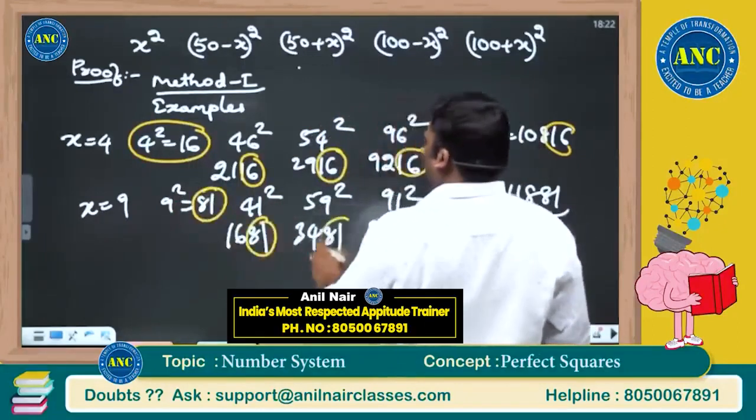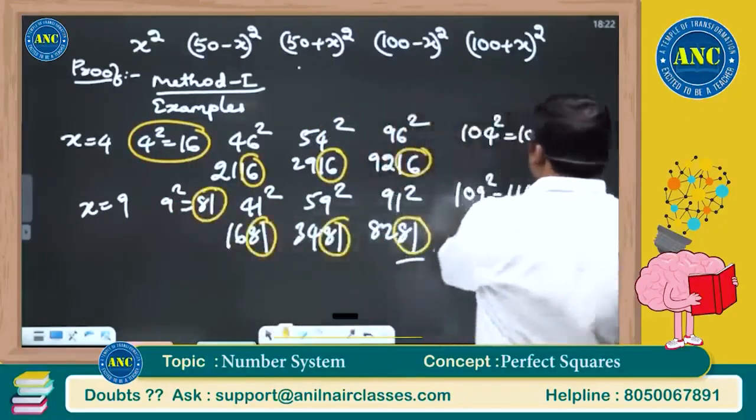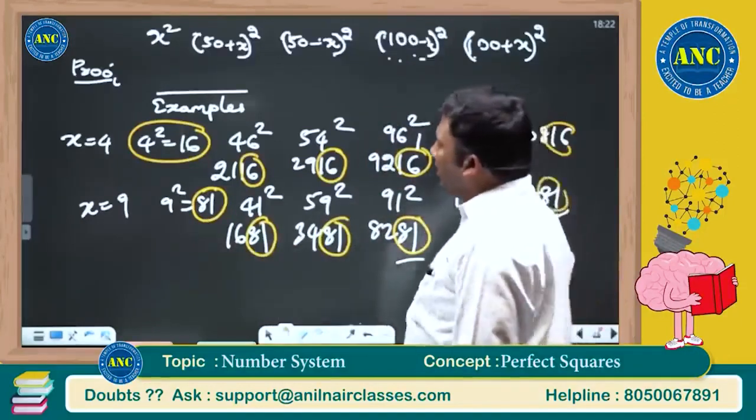To confirm: x = 9, so 9² = 81, and all related squares end in 81. I hope this idea is clear.